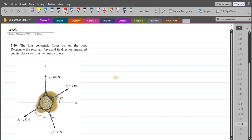According to this problem, four concurrent forces act on the post. Determine the resultant force and its direction measured counterclockwise from the positive x-axis.